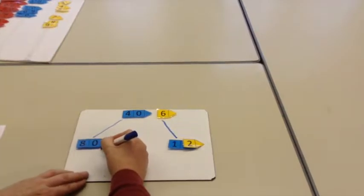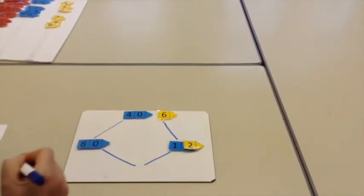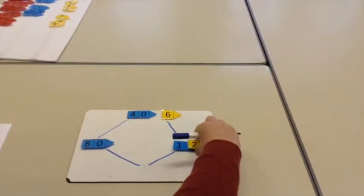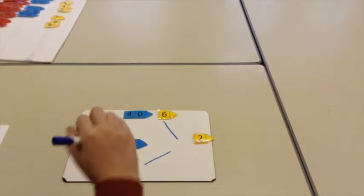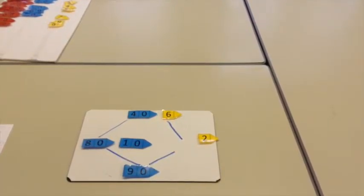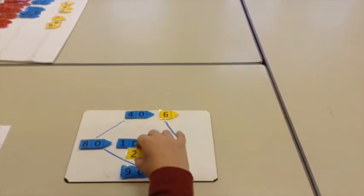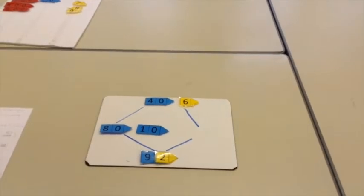Next, you draw the diamond. Add the tens together. 80 add 10 makes 90. Then you add the 2. Double 46 makes 92.